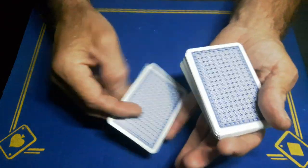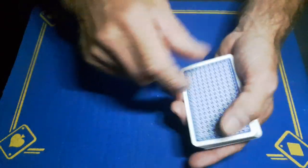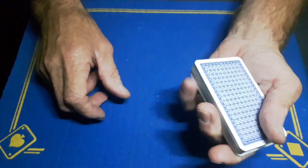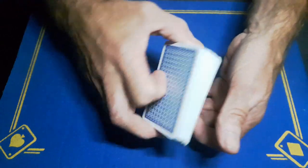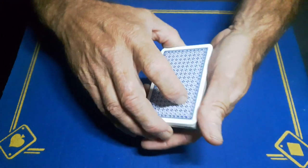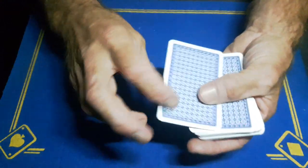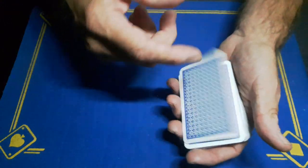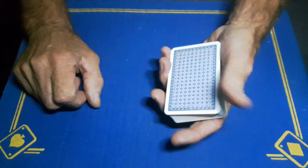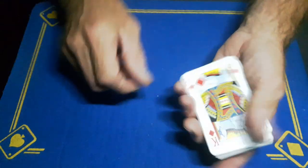So the spectator's card is on top. Pinky pull down, thumb break, swing cut the top portion, momentarily put them together, swing cut the top packet, drop this down. You would have put an indifferent card on the top of the deck.